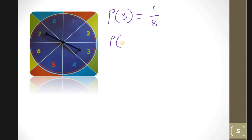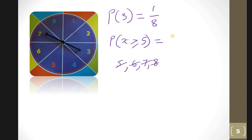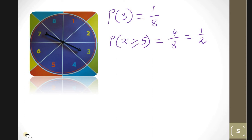What is the probability of getting a number greater than or equal to five? Numbers greater than or equal to five are five, six, seven, and eight — that's four out of eight, which simplifies to a half.